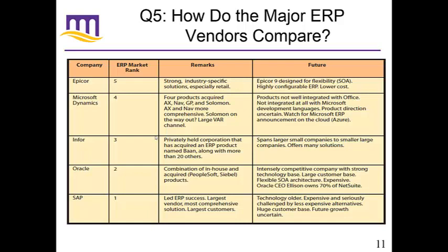Number two on the list is Oracle. Oracle originally became big because they sold a very popular database — the Oracle database. As they continued to grow, they decided to add more business support, which led to them buying companies like PeopleSoft and Siebel, and they combined all these products together into an ERP system. PeopleSoft actually developed customer relationship management, which has been integrated into their ERP system. Oracle is a very competitive company with a very large customer base and very flexible architecture.